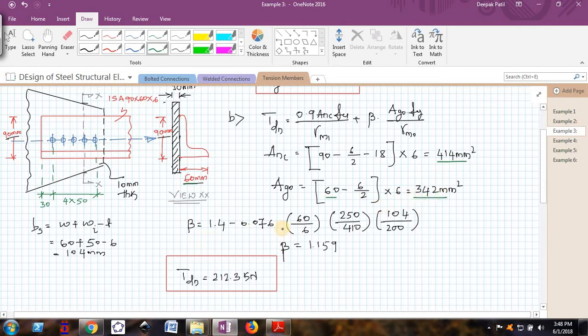Beta will also change. So 1.4 minus 0.076, this is W that is outstanding leg width, this is thickness of the angle, this is Fy that is yield strength, this is Fu that is ultimate tensile strength.